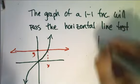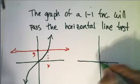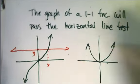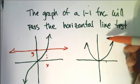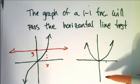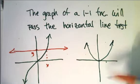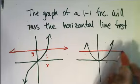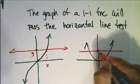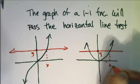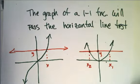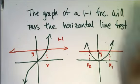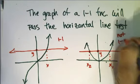Let's look at an example of a graph that does not represent a one-to-one function. This graph passes the vertical line test — any vertical line intersects it in only one place — so it is a function. But if I take a horizontal line, this particular y-value has two different x-values. So this one is one-to-one, and this one is not one-to-one.